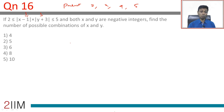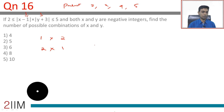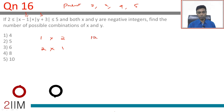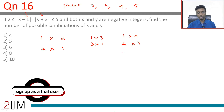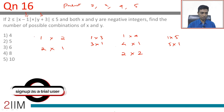2 can be obtained as 1×2 or 2×1. 3 could be 1×3 or 3×1. 4 could be 1×4, 4×1, or 2×2. 5 could be 1×5 or 5×1. Now let's think about this in terms of |x-1| × |y+3|.